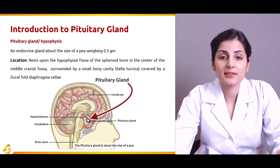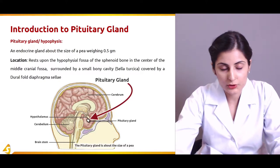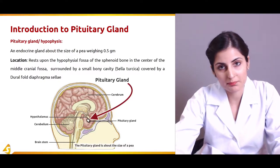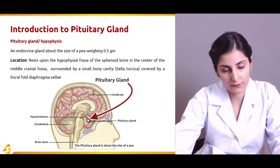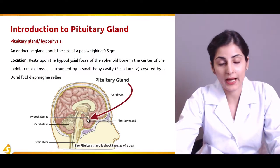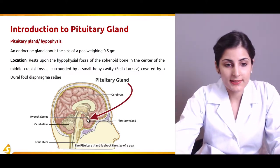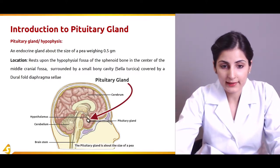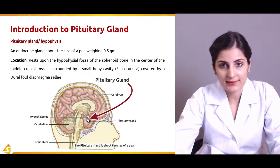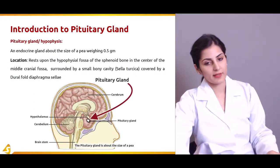Let us have an introduction to the pituitary gland, which is also known as the master gland of the body. Its second name is hypophysis. It is an endocrine gland about the size of a pea, weighing only 0.5 grams.